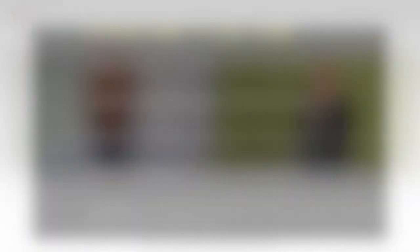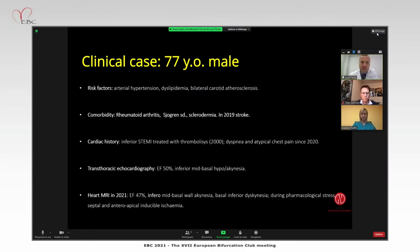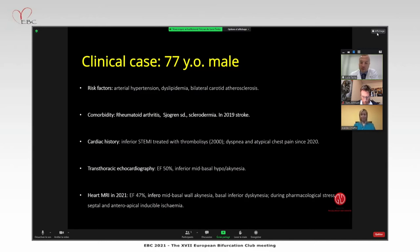Transthoracic echocardiography showed an ejection fraction of around 50% with some mild inferior mid-basal hypokinesia. This patient was referred to cardiac MRI before entering the cath lab. The MRI report showed an ejection fraction of 47% with infero-mid basal wall akinesia, basal inferior dyskinesia, and during pharmacological stress, there was septal antero-apical inducible ischemia.